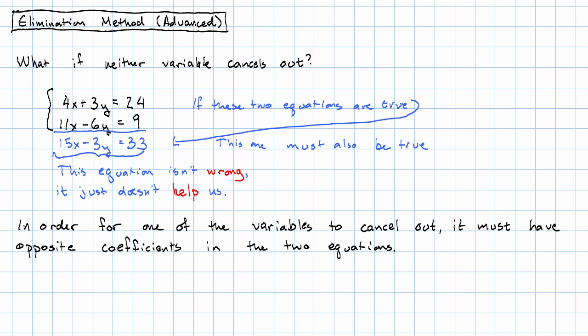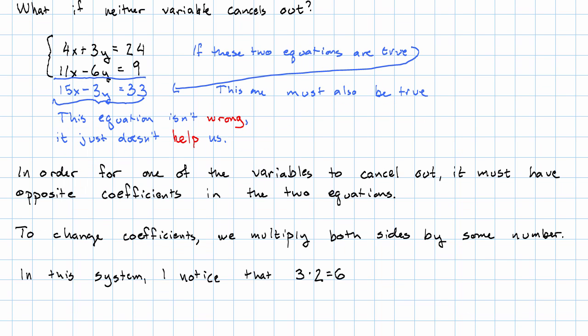What can we do that lets us change a coefficient? Well the only thing that we can really do to change coefficients is to multiply both sides of the equation by some number. What number should we multiply by? We should choose a number to multiply by so that one pair of coefficients are opposite.